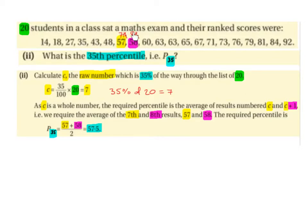So 57 plus 58 divided by 2 gives us 57.5, which is P35, the 35th percentile. So it's the average in between 57 and 58.